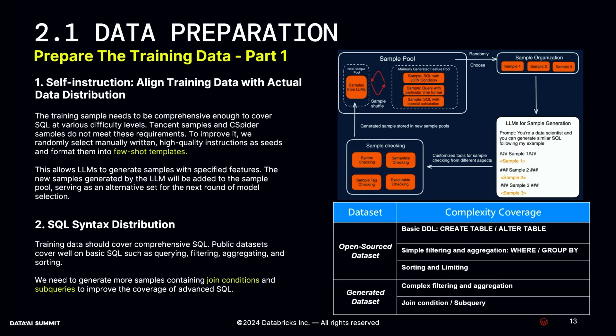Data preparation, part one — there are two points. First, self-instruction: align training data with actual data distribution. From the pipeline flow, we manually generate several high-quality samples which are placed into a sample pool. We randomly select some examples and feed them to the LLM as few-shot examples. The generated SQL is evaluated by the sample tracking module. If the SQL is valid, it's added to the pool as an alternative set for the next round of model selection.